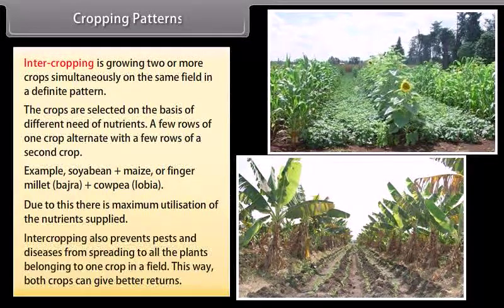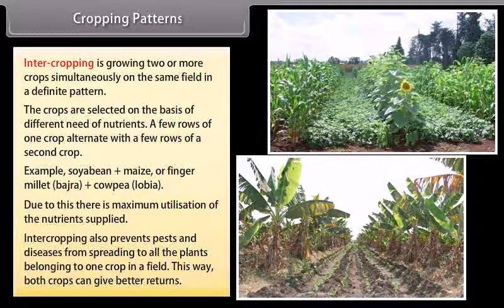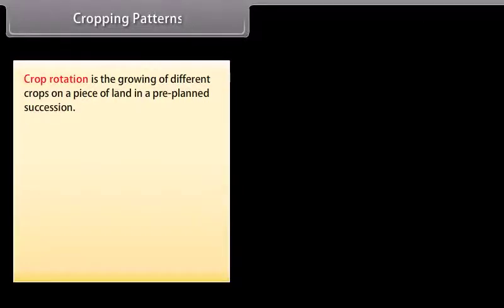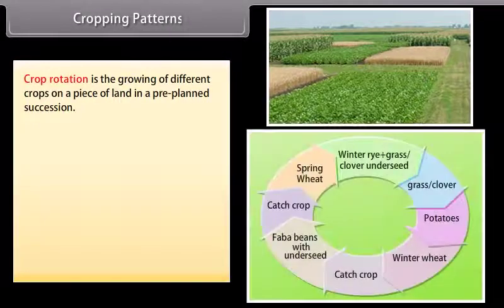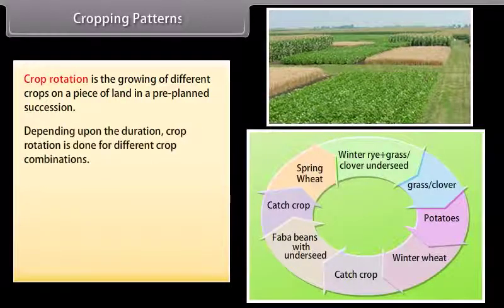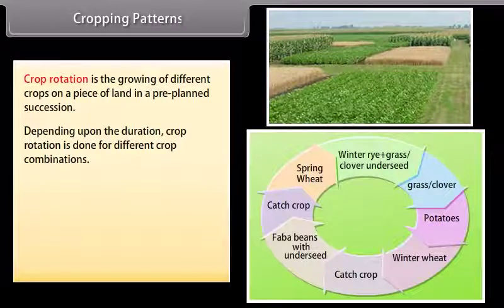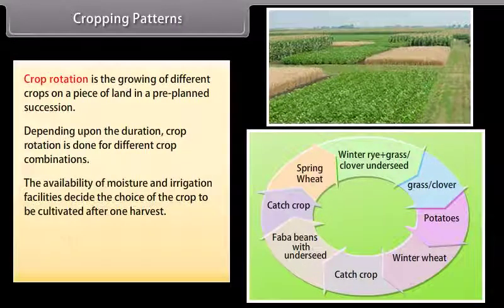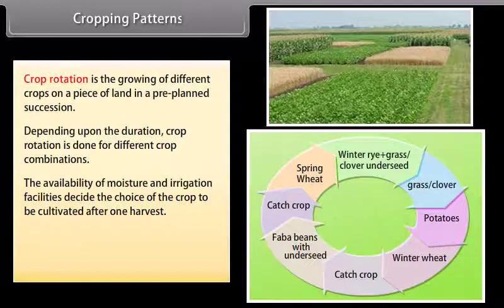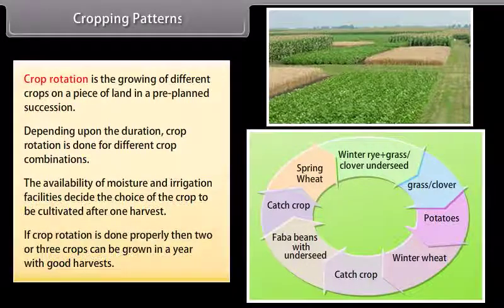Intercropping also prevents pests and diseases from spreading to all the plants belonging to one crop in a field, allowing both crops to give better returns. Crop rotation is the growing of different crops on a piece of land in a pre-planned succession. Depending upon the duration, crop rotation is done for different crop combinations. The availability of moisture and irrigation facilities decides the choice of the crop to be cultivated after one harvest. If crop rotation is done properly, then two or three crops can be grown in a year with good harvests.